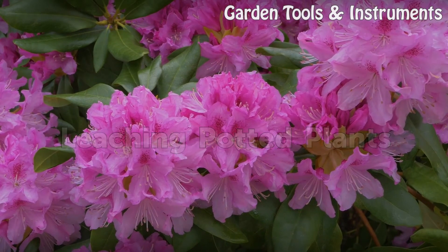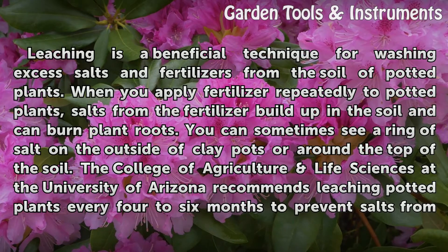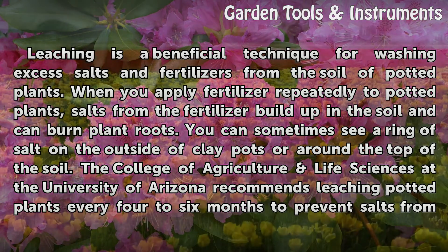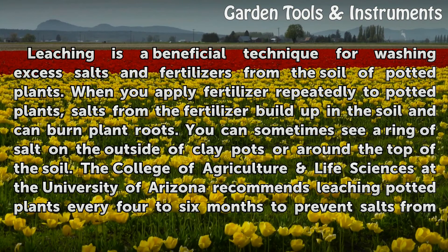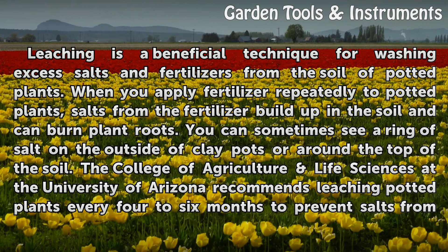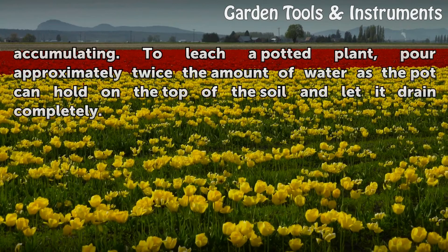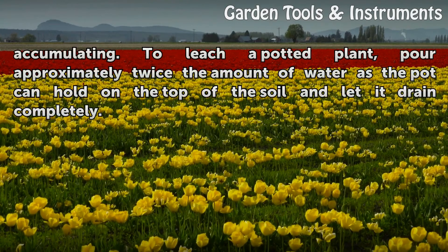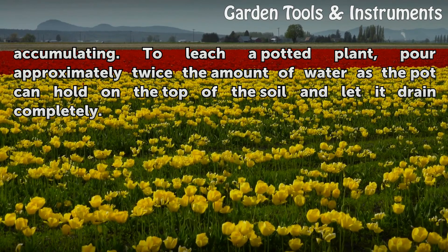Leaching is a beneficial technique for washing excess salts and fertilizers from the soil of potted plants. When you apply fertilizer repeatedly to potted plants, salts from the fertilizer build up in the soil and can burn plant roots. You can sometimes see a ring of salt on the outside of clay pots or around the top of the soil. The College of Agriculture Life Sciences at the University of Arizona recommends leaching potted plants every four to six months to prevent salts from accumulating. To leach a potted plant, pour approximately twice the amount of water as the pot can hold on the top of the soil and let it drain completely.